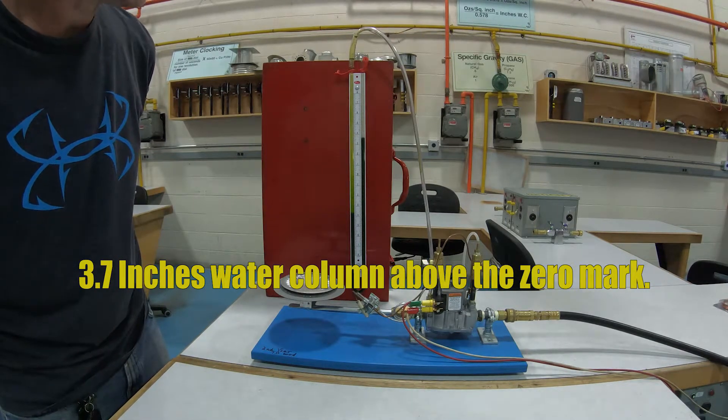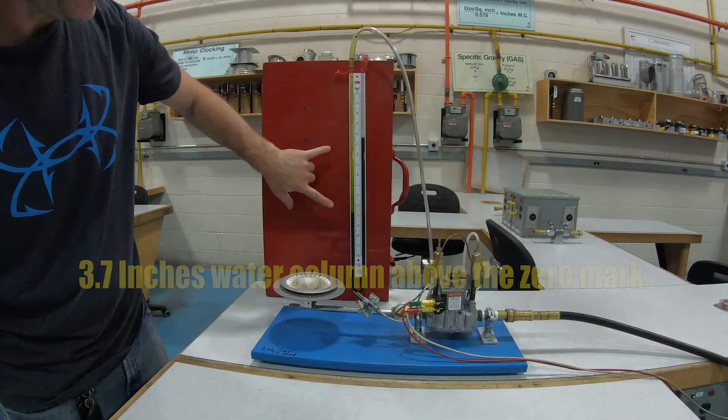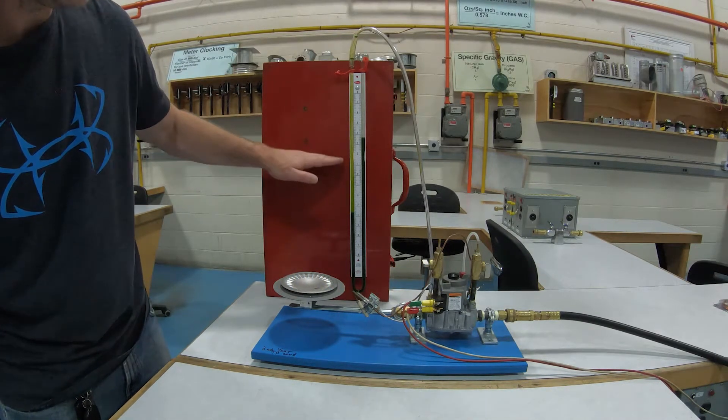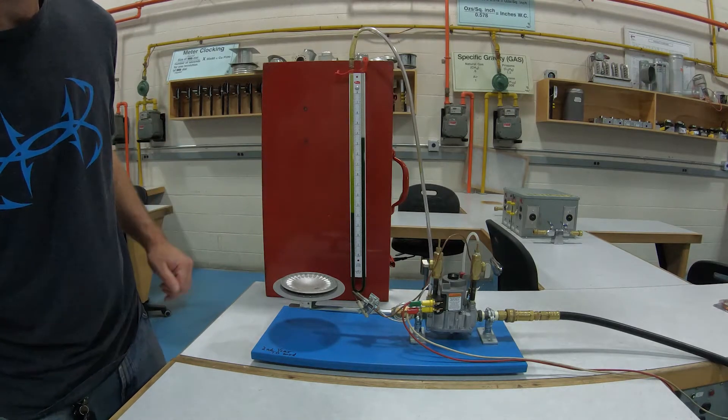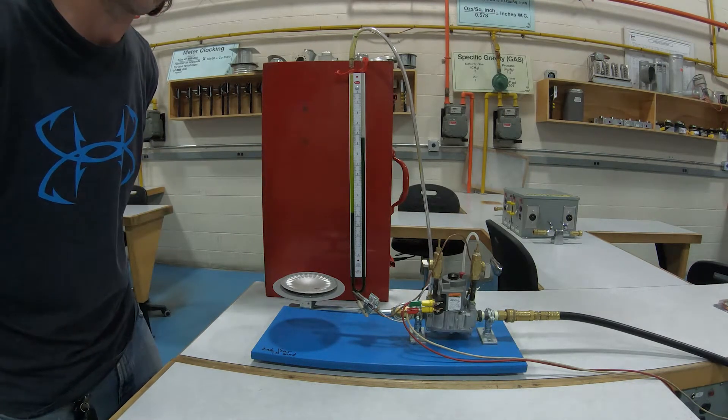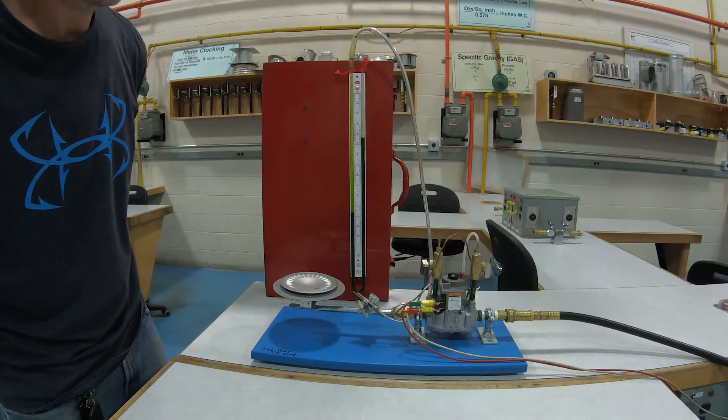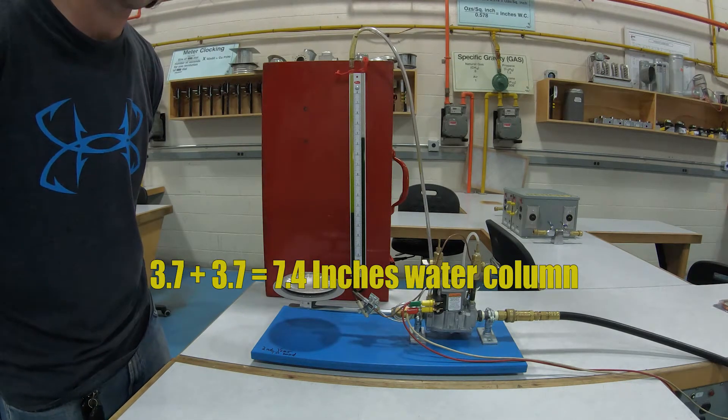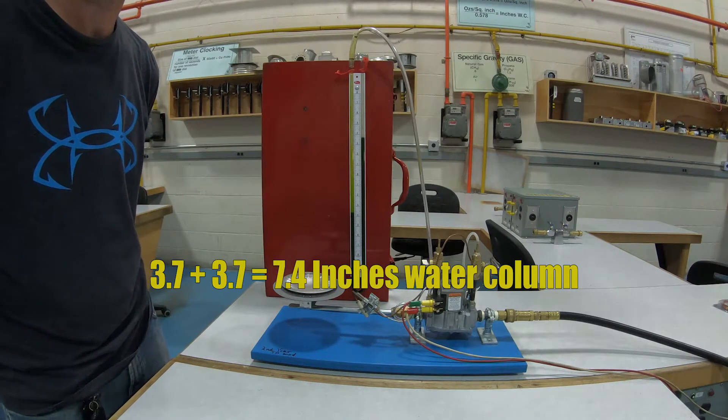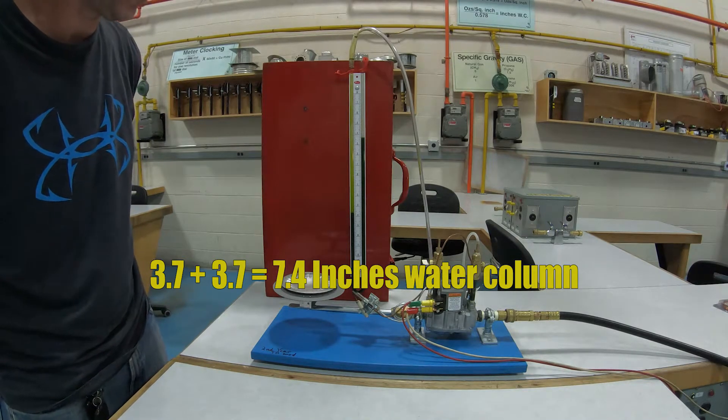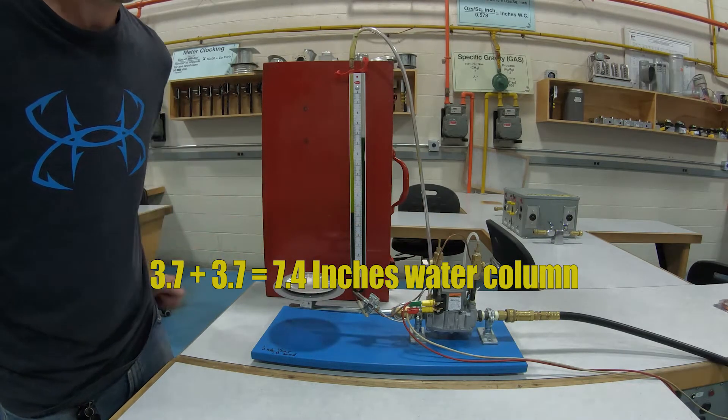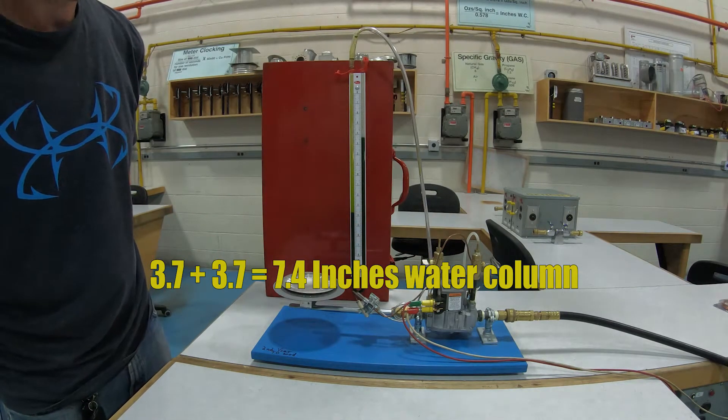So in order to use this gauge, what I need to do is find out the total distance here in inches. You can also do this in millimeters, but we're going to just stick to inches. So 3.7 plus 3.7 is 7.4 inches of water column. So my line pressure here, because nothing's running, is 7.4 inches of water column.